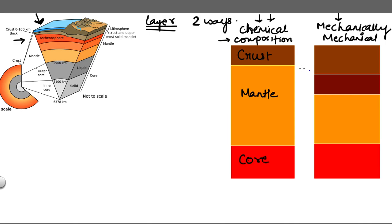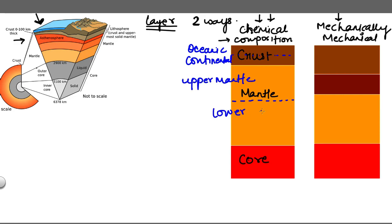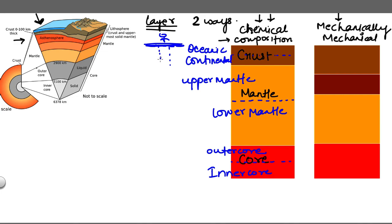When we divide the layers based on composition, they can be classified into three groups: first is the crust, then the mantle, and then the core. These layers can be further subdivided. The crust divides into oceanic crust and continental crust. The mantle divides into upper mantle and lower mantle. Similarly, the core subdivides into outer core and inner core. We move from the ground level down toward the core as we dig deeper inside the earth.